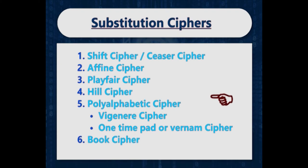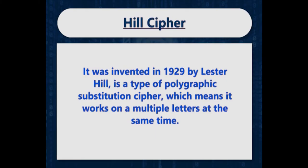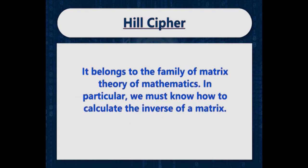Today we are going to talk about hill cipher, Vigenère cipher, Vernam cipher, and book cipher. Let us start with the hill cipher first. The hill cipher was invented in 1929 by Lester Hill. It is a type of polygraphic substitution cipher, which means it works on multiple letters at the same time. The hill cipher belongs to the family of matrix theory of mathematics. In particular, we must know how to calculate the inverse of a matrix.